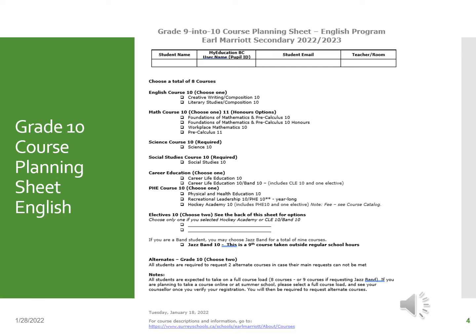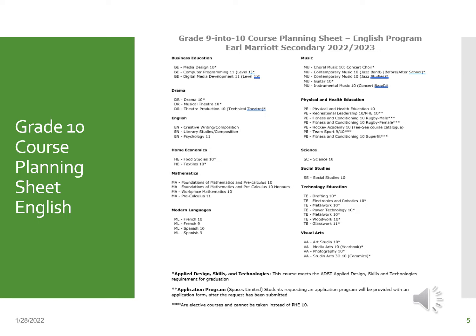This is an example of the course planning sheet for students going into grade 10 in the English program. It lists your required courses, the number of electives you're allowed to choose — that's two electives — and notes the alternates. All students must choose two alternate courses in case we can't meet your main course requests. The back of the sheet lists all of the courses you have as options, both required and elective.